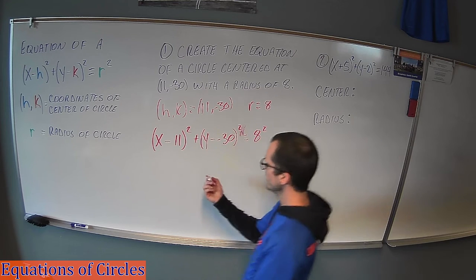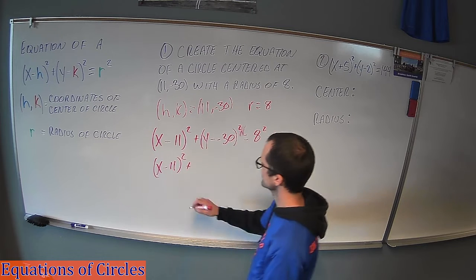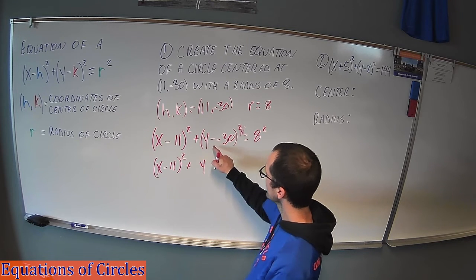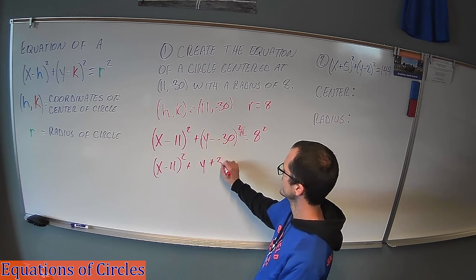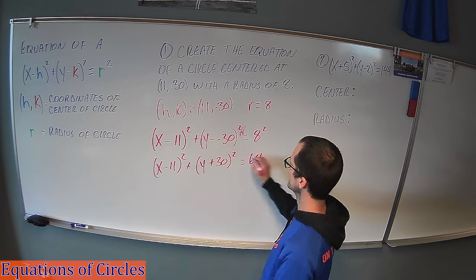Okay, we have one more piece to this puzzle to clean it up. So we're going to do (x - 11)². Leave it as is. Plus y, well, minus a negative is the same thing as adding. So (y + 30)². And then 8² is 64.